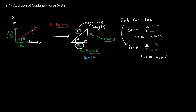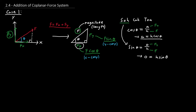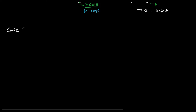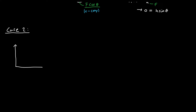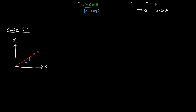We have now found both the x and y components of force F — this is Case 1, which deals with an angle theta. Now we move on to Case 2, where we again have an x and y plane with a force F, but this time instead of an angle we are given a triangle. This is called a small slope triangle, which defines the direction of the force just like an angle.